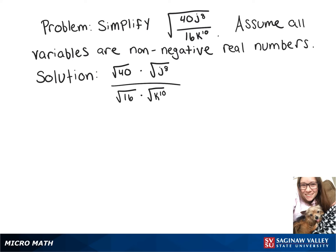So now we want to think of a perfect square that is a divisor of 40, so we rewrite that as the square root of 4 times 10. And then we can divide our exponent under the square root by 2, leaving us with j to the 4th.